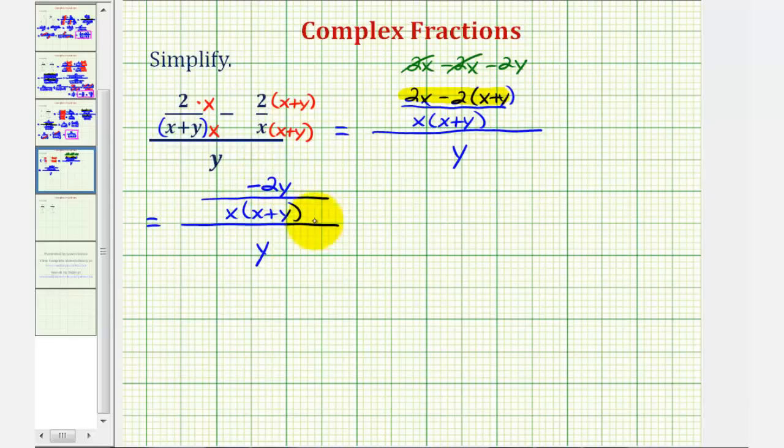And now again, because this larger fraction bar represents division, we're going to write this as a division problem. So we have the fraction on top, negative two y, over x times the quantity x plus y, divided by y.